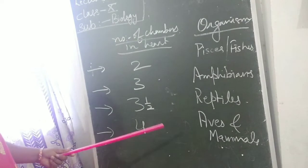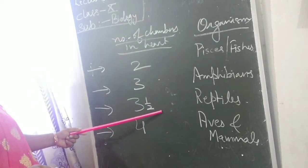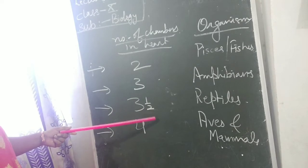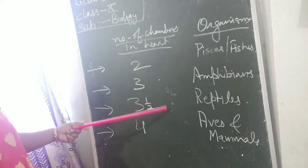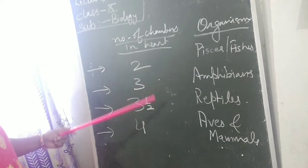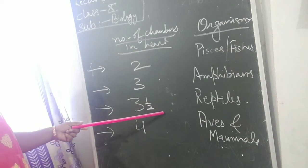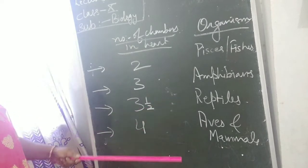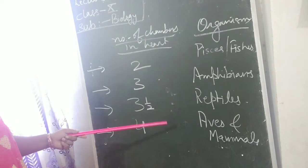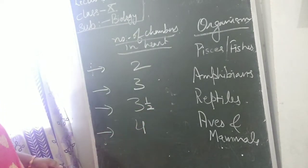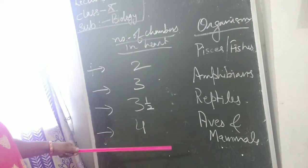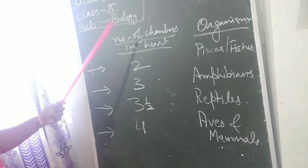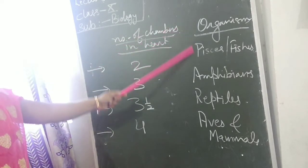Reptiles, except crocodiles, have a 3 and a half chambered heart: 2 auricles and 1 and a half ventricles — meaning 1 left auricle, 1 left ventricle, 1 right auricle, and a partially developed right ventricle. Crocodiles are the exception among reptiles and have a 4-chambered heart. Birds and mammals also have a 4-chambered heart with 2 auricles and 2 ventricles. In this way, organisms can be classified on the basis of the chambers of the heart.